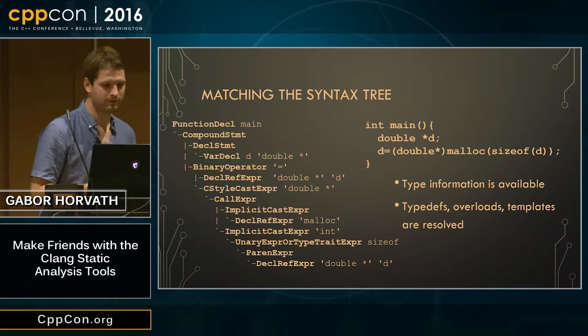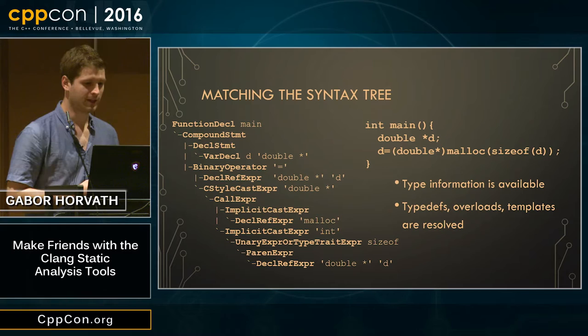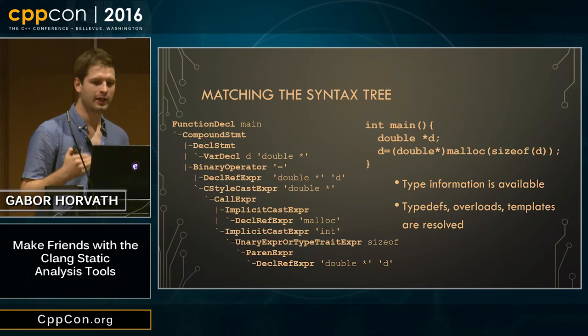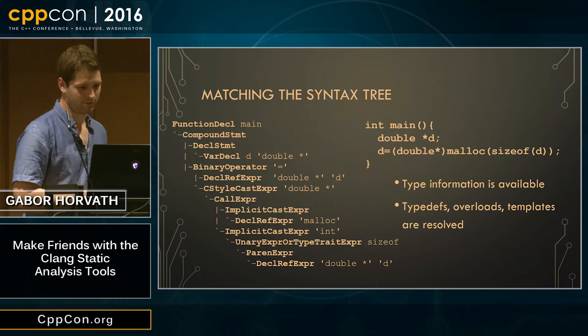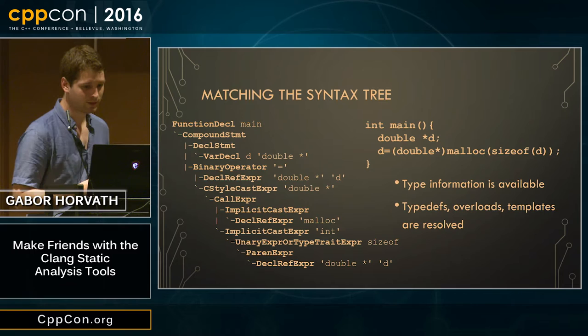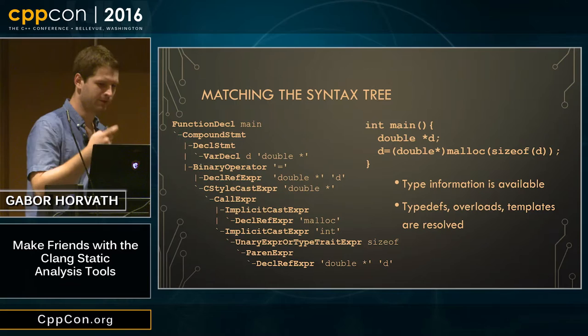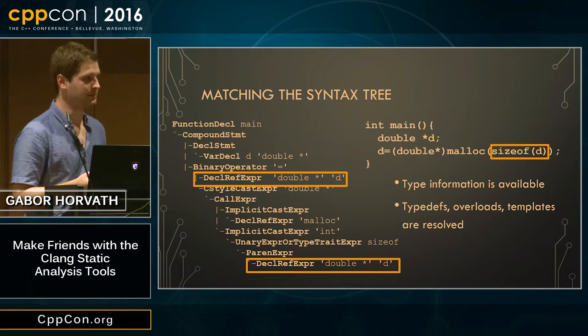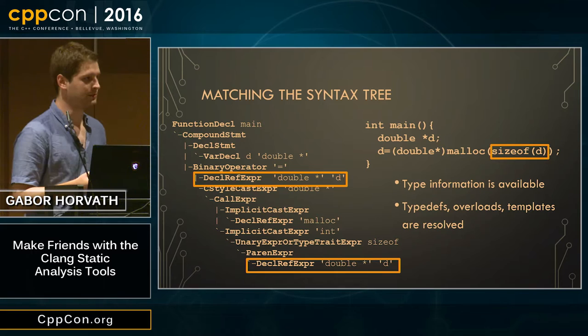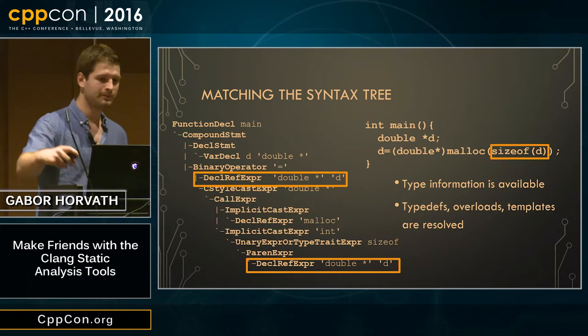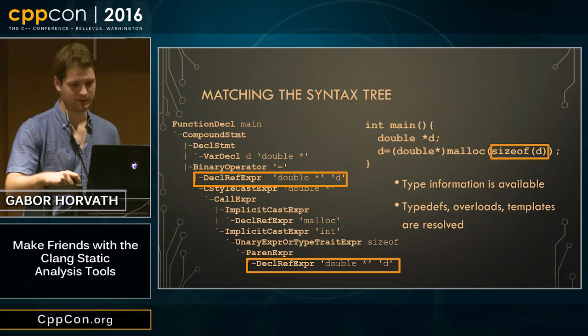When we match on the syntax tree (AST) we can do much more, because the AST contains type information. For example, we might spot that we're allocating memory for a double but allocating the wrong number of bytes — because we forgot to dereference the pointer before calling sizeof. Since typedefs, overloads, and templates are all resolved in the AST, we can find many more error types.